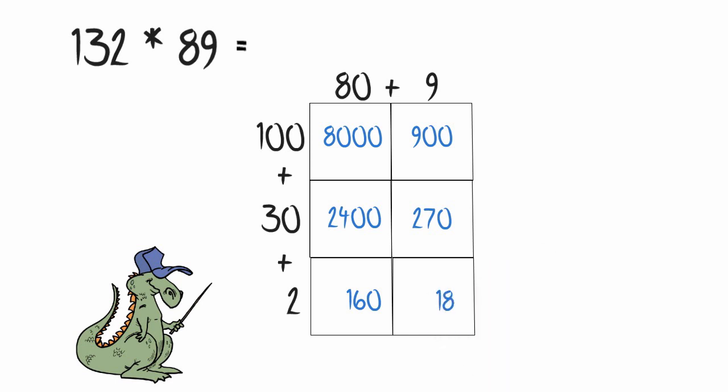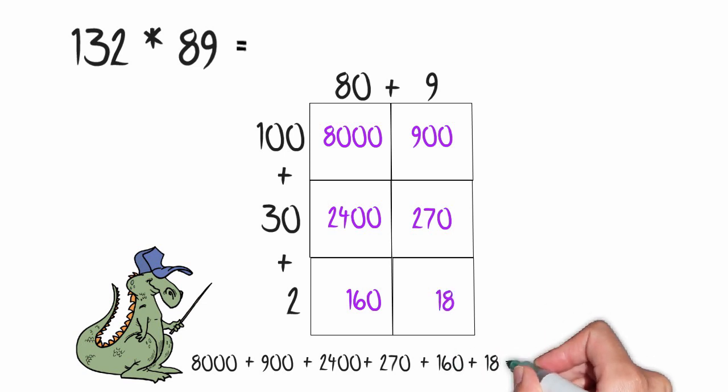Again, I'm going to add up all the numbers involved. 8,000 plus 900 plus 2400 plus 270 plus 160 plus 18. That gives me 11,748.